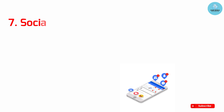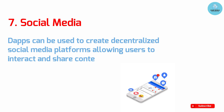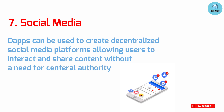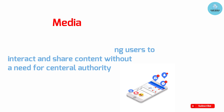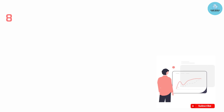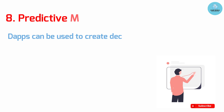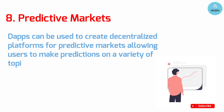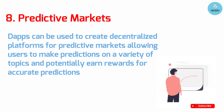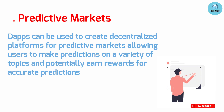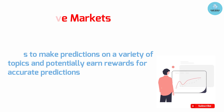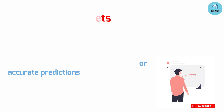Seventh, social media: dApps can be used to create decentralized social media platforms, allowing users to interact and share content without the need for a central authority. Eighth, predictive markets: dApps can be used to create decentralized platforms for predictive markets, allowing users to make predictions on a variety of topics and potentially earn rewards for accurate predictions.